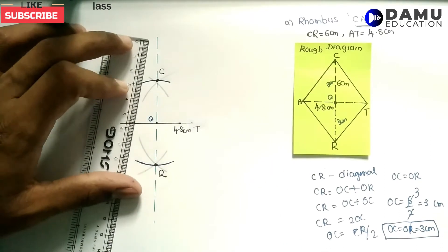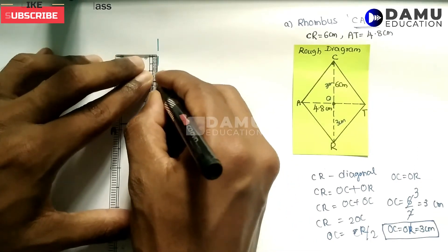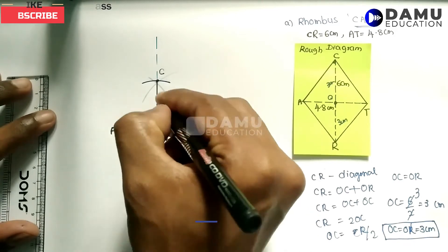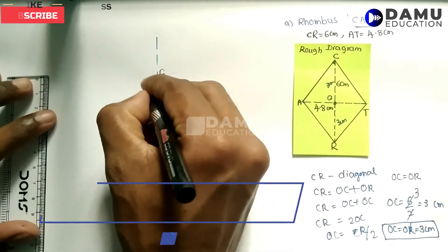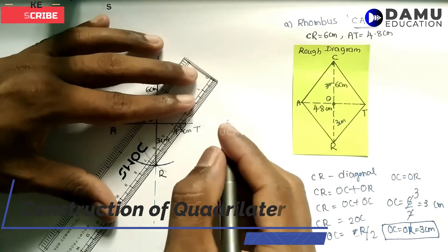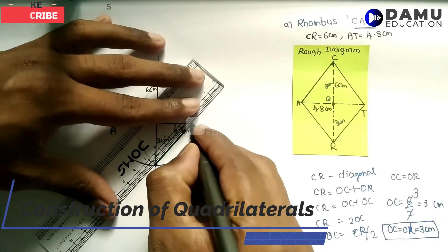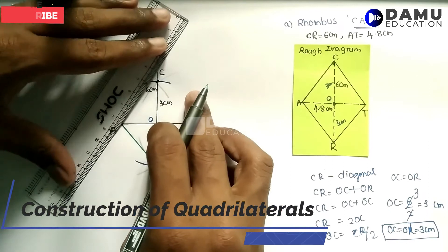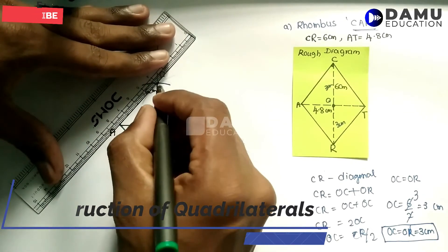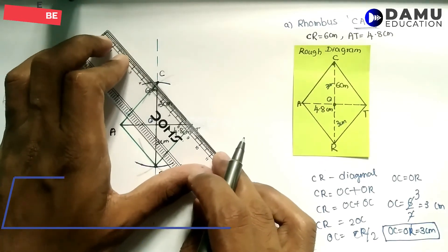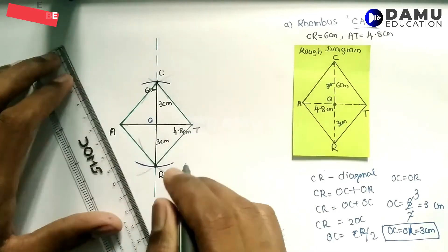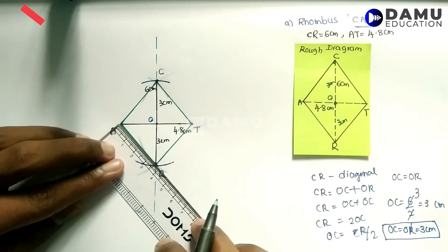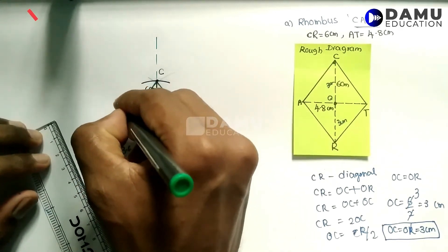Now join all these points — C, A, R, and T — these are the diagonals. CR is 3 centimetres on each side, totally 6 centimetres. Joining CR and AT, we are constructing the rhombus with equal distances on all sides. Measuring the side length, it comes to approximately 3.6 centimetres. So all sides of rhombus CART will be 3.6 centimetres.